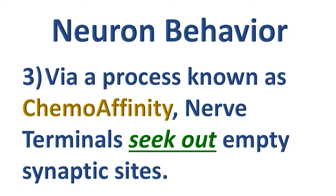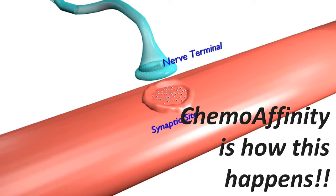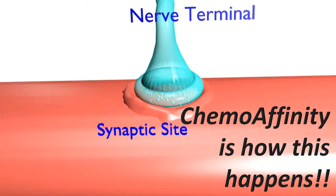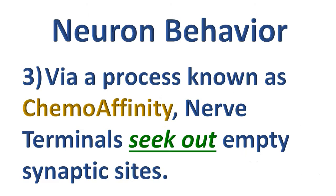The third point about neuron behavior concerns a process known as chemo affinity. It is through this process that nerve terminals are able to seek out and attach to empty synaptic sites. The process of neural chemo affinity in action looks something like this. The nerve terminal is attracted to the binding sites located inside the synaptic site, and as shown, is drawn to, then connects to the synaptic site.